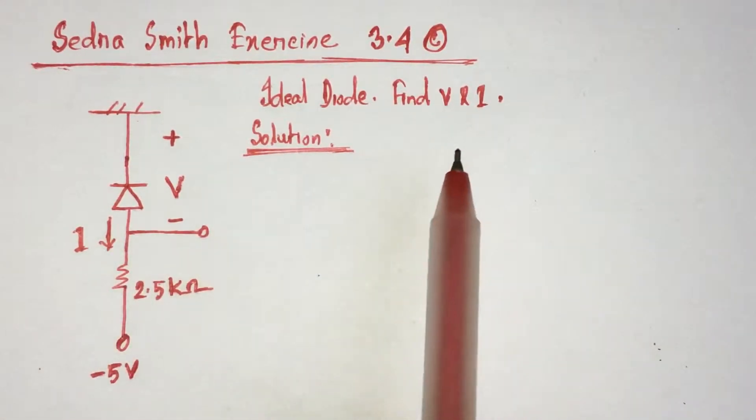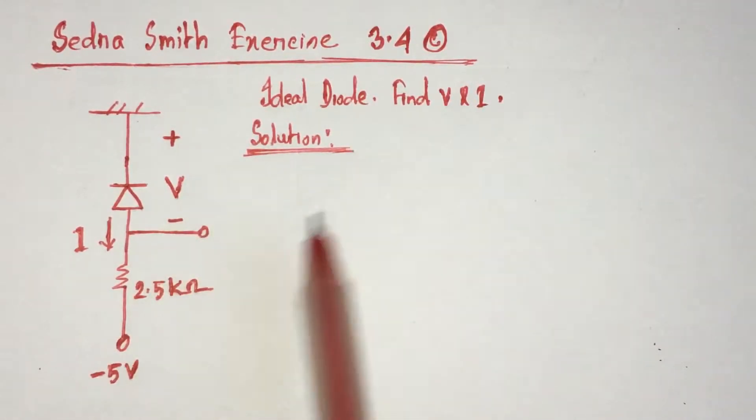This is the ideal diode. Here we have to identify the voltage V and current I.